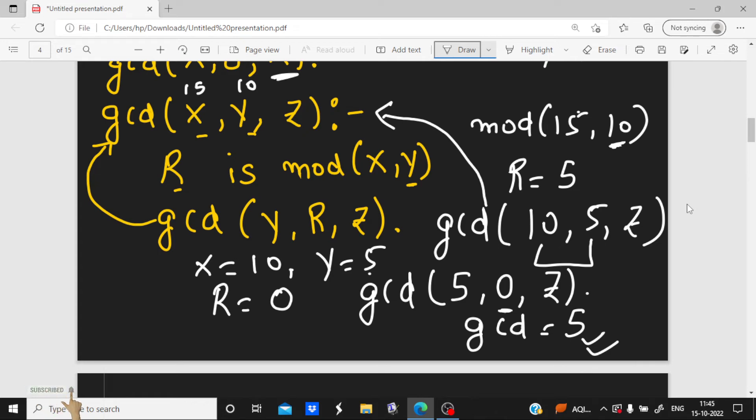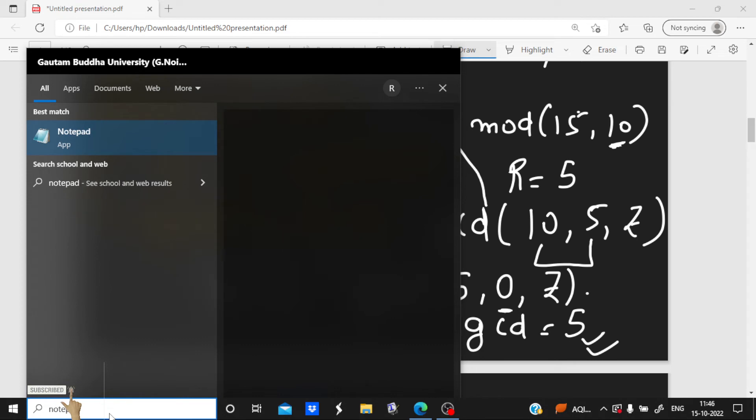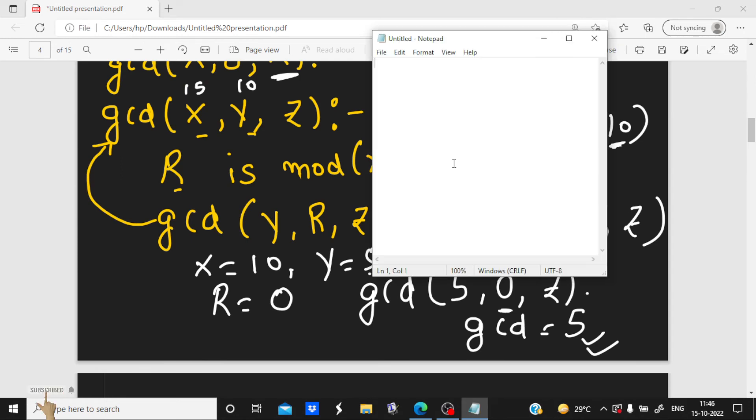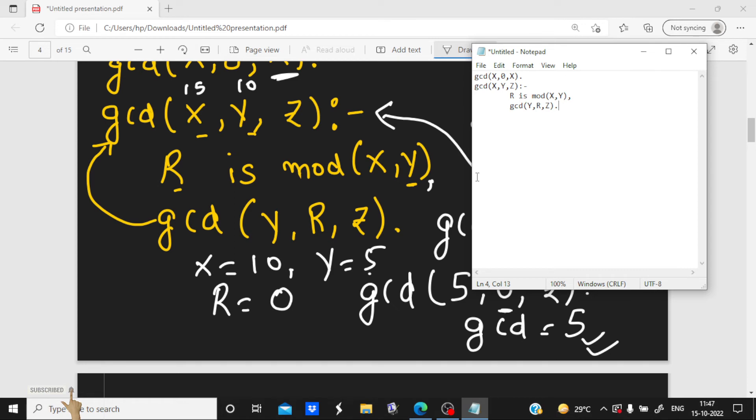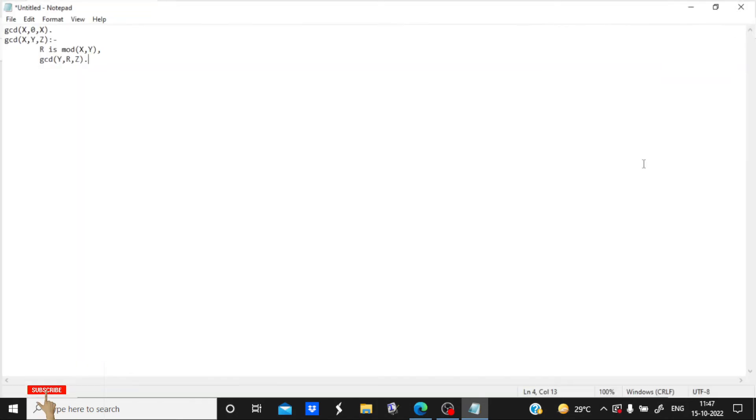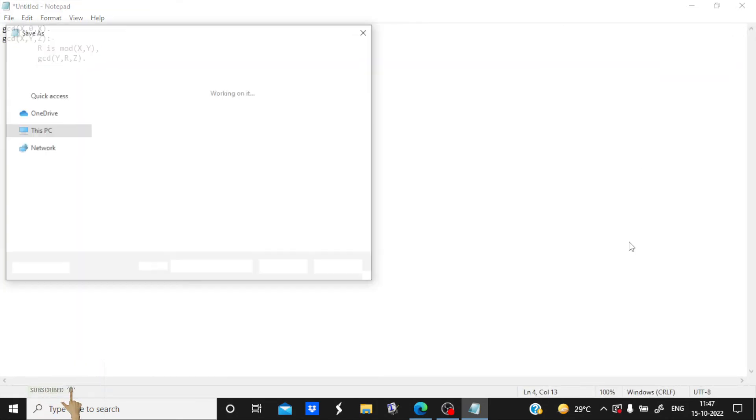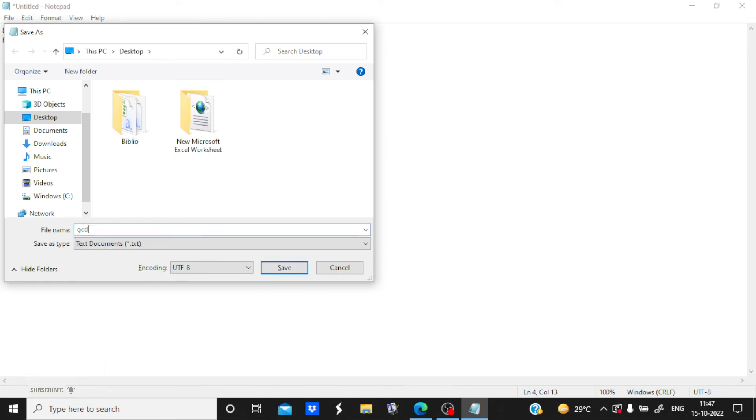So now we will implement it with the help of console. So for that you need to firstly open the notepad. So just open the notepad and then you need to write the same program over here. After writing what we need to do is we need to just save it as gcd.pl. pl is the extension for prolog files, and then save.